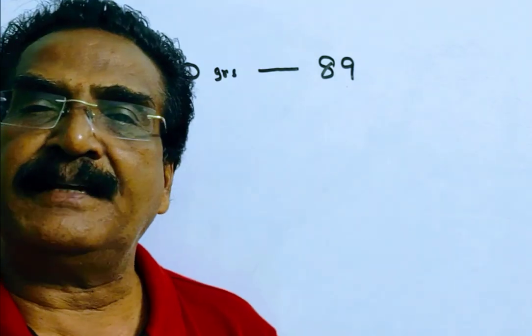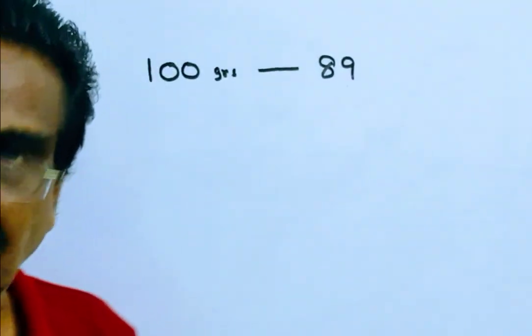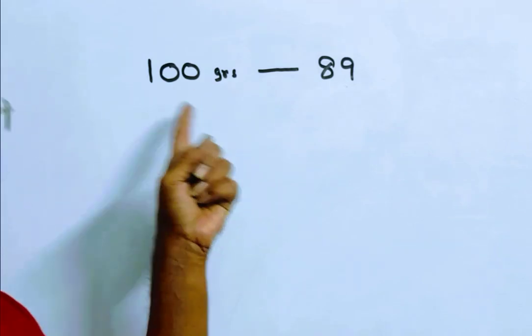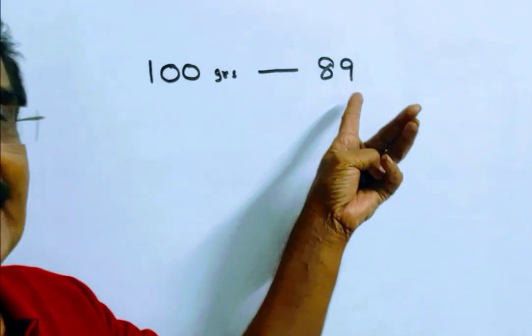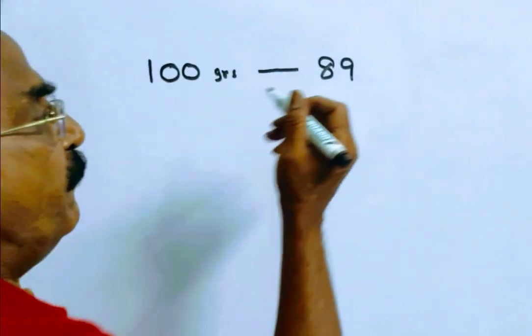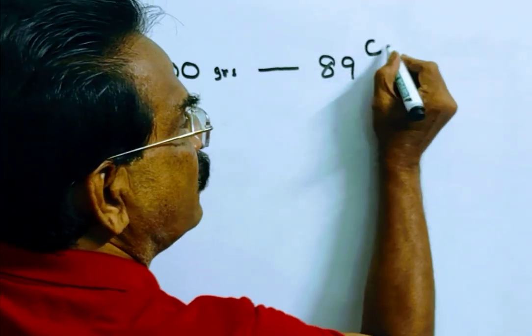Cheating to the extent of 11% while buying implies he is getting 100 grams worth of goods for Rs. 89 only. So, this is his cost price.